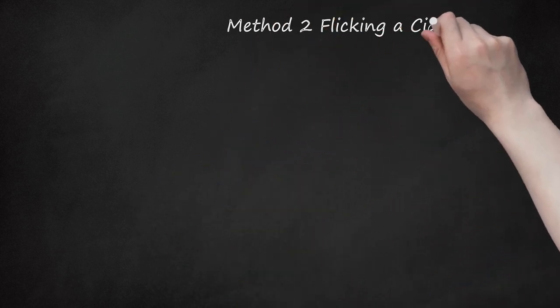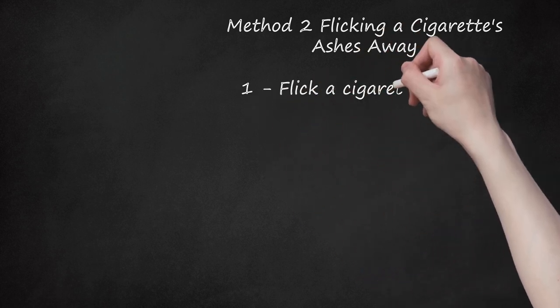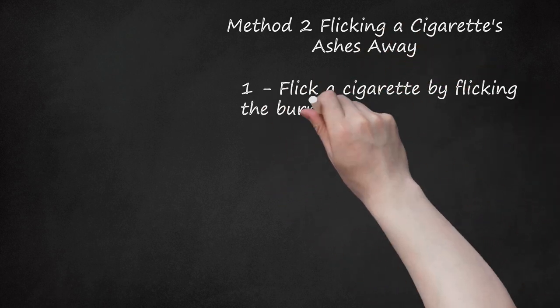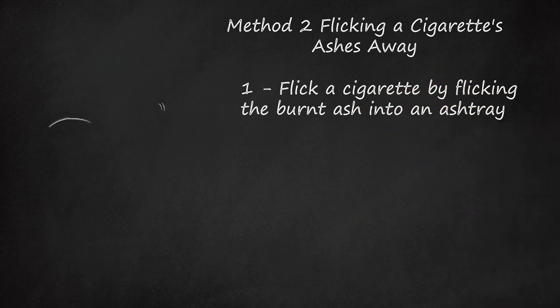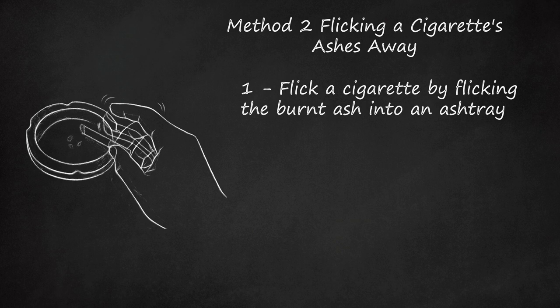Method 2: Flicking a Cigarette's Ashes Away. Step 1: Flick a Cigarette By Flicking the Burnt Ash Into an Ashtray. If you smoke, you may want to at least do it with style. Smokers use their fingers to flick ash off a cigarette instead of tapping the cigarette on an ashtray. You will need to flick the cigarette into the ashtray several times while it burns.